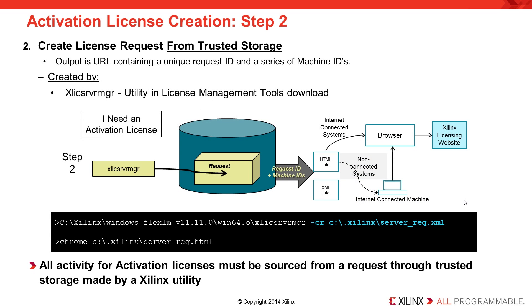To create a floating license for activation in Vivado 2014.1 and later, first create a license request from trusted storage using the XLICSVRMGR utility from the license management tools download. This utility creates a request ID and machine IDs output into both an XML file and an HTML file. The command is: xlicsvrmgr -cr server_request.xml. Then launch your browser with the HTML file — for example, chrome server_request.html — which will take you directly to the Xilinx licensing website with identification information pre-populated.